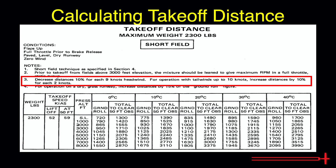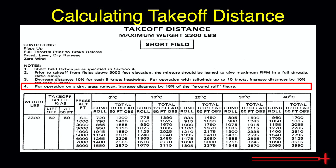We'll decrease our takeoff distance by 10% per 9 knots of headwind, and we have 16 knots of headwind. Let's plan to decrease the distance by only 15% rather than 20%, leaving us with a bigger buffer for any imperfections during takeoff. Lastly, dry grass runways increase the ground roll distance by 15%. These numbers remain unadjusted when taking off from paved runways.